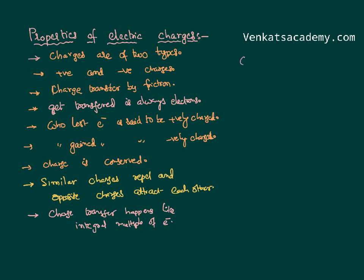The total charge is the number of electrons transferred multiplied by the charge of the electron itself. This means charge is always available as integral multiples of the charge of an electron. This concept is called charge quantization.